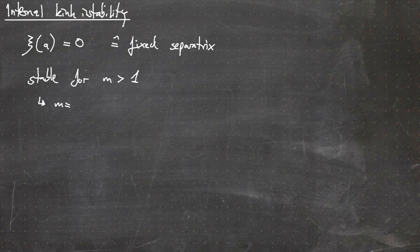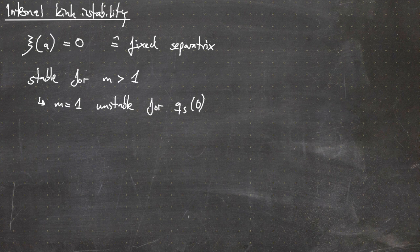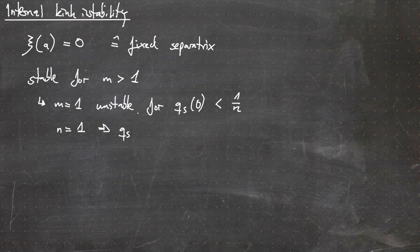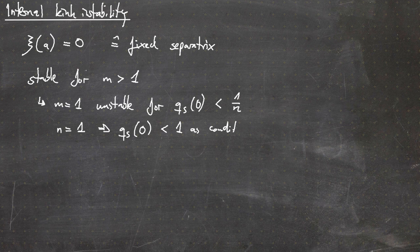For m equals one, there is an unstable mode. This mode is unstable if the safety factor at the plasma center q(0) is smaller than 1/n. For n equals one, we get an unstable mode when q(0) at the center is smaller than one. This is the condition for instability.